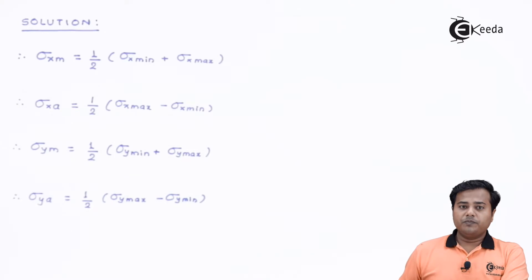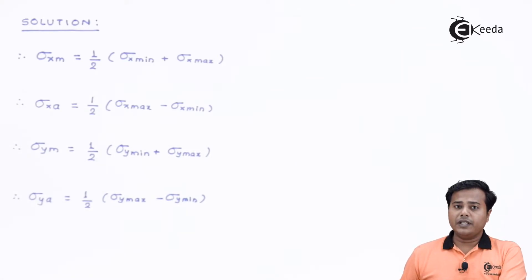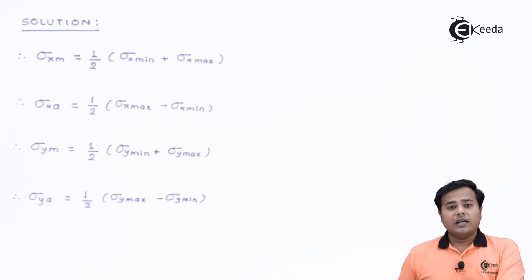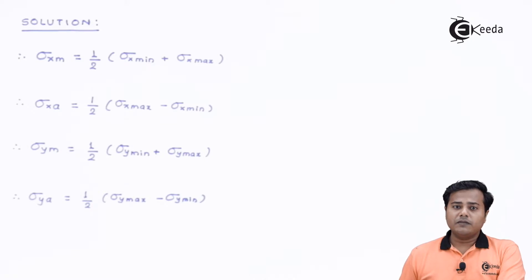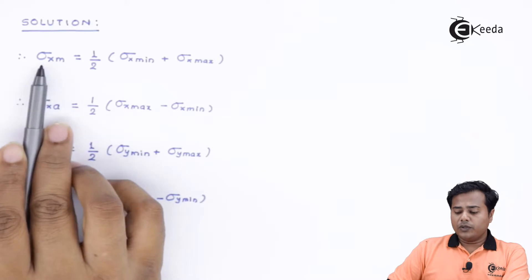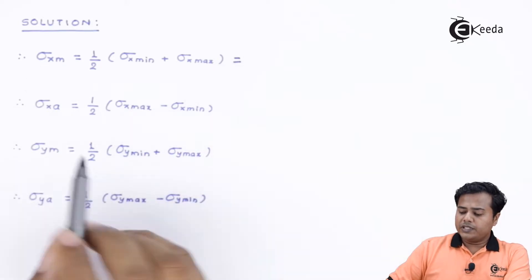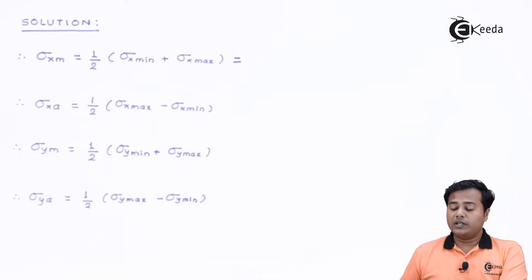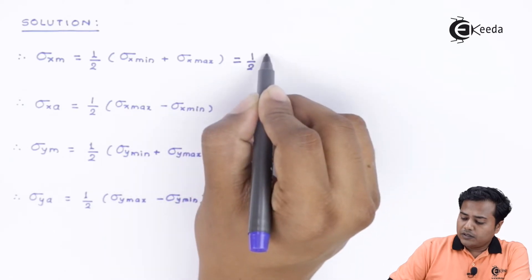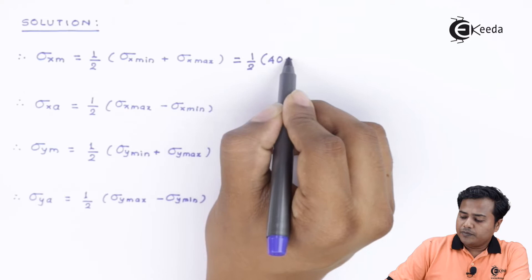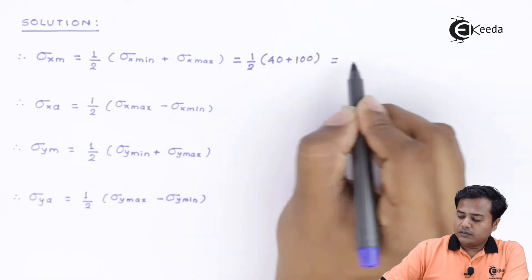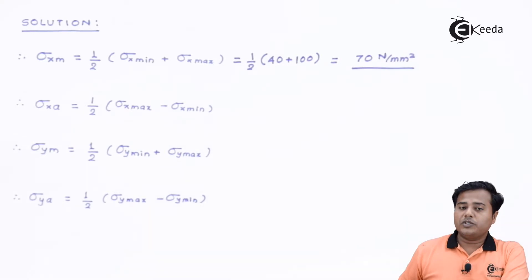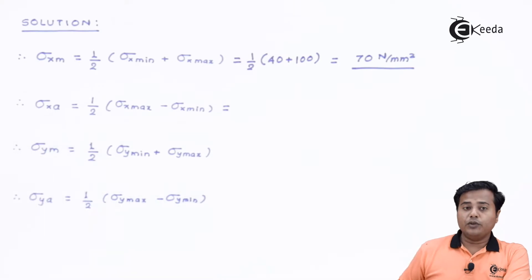We know the mean value is the average of maximum and minimum, and the amplitude value is half the difference between them. Starting with the mean stress in the X direction: the formula is (max + min) / 2. With a minimum of 40 and maximum of 100, the mean stress in the X direction comes out to be 70 N/mm².